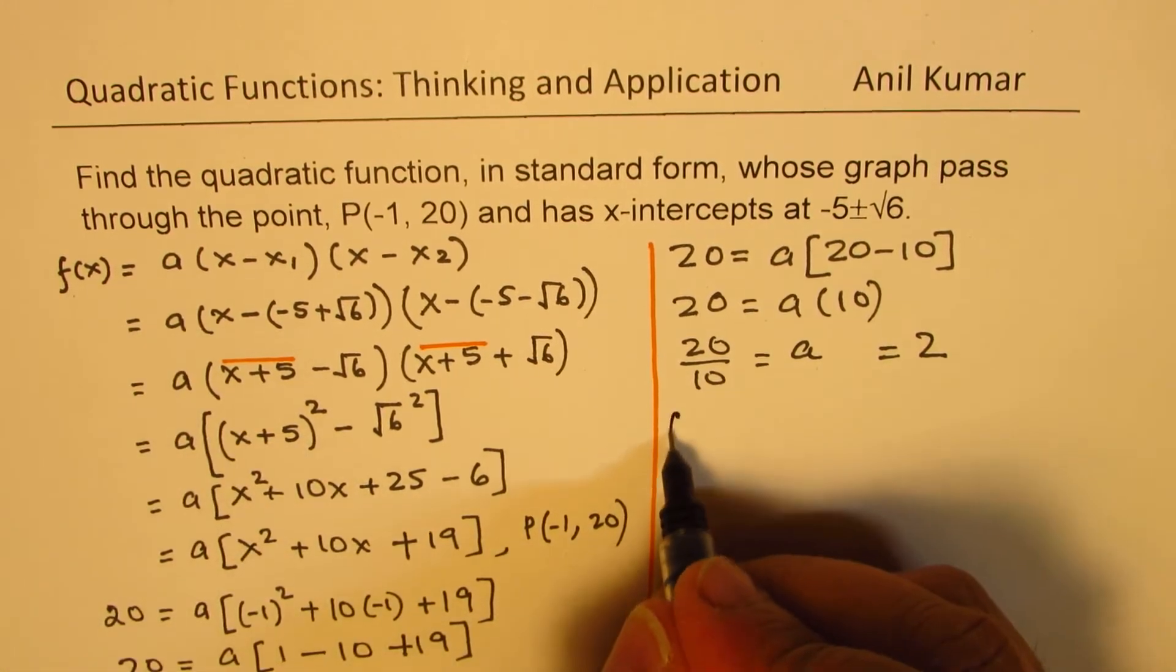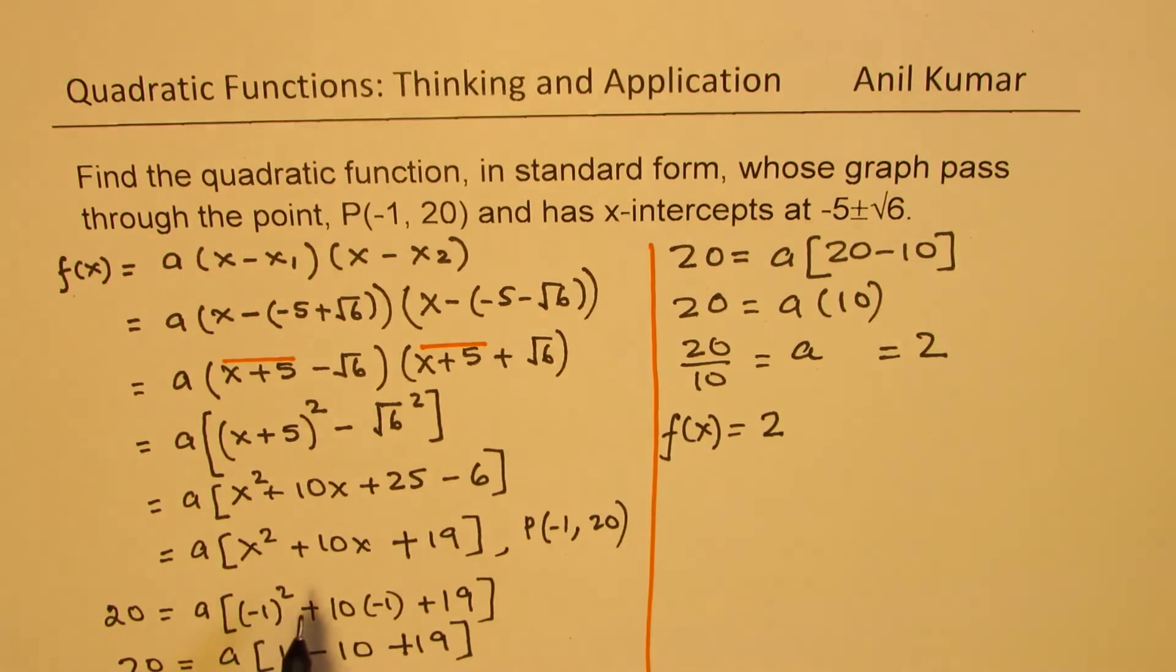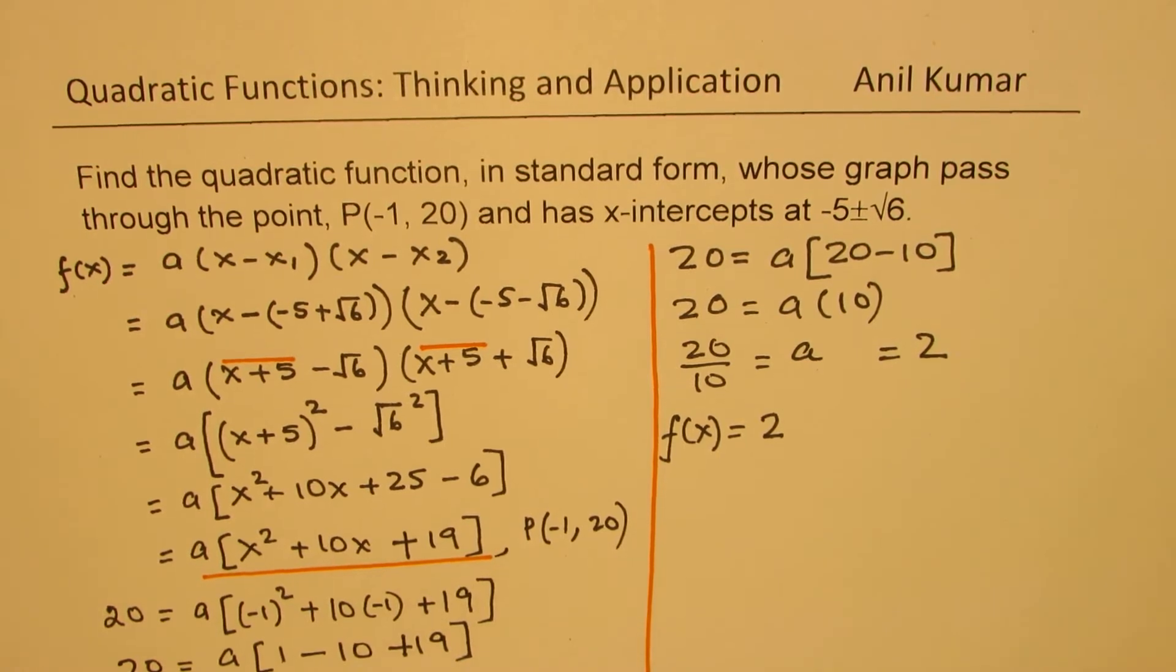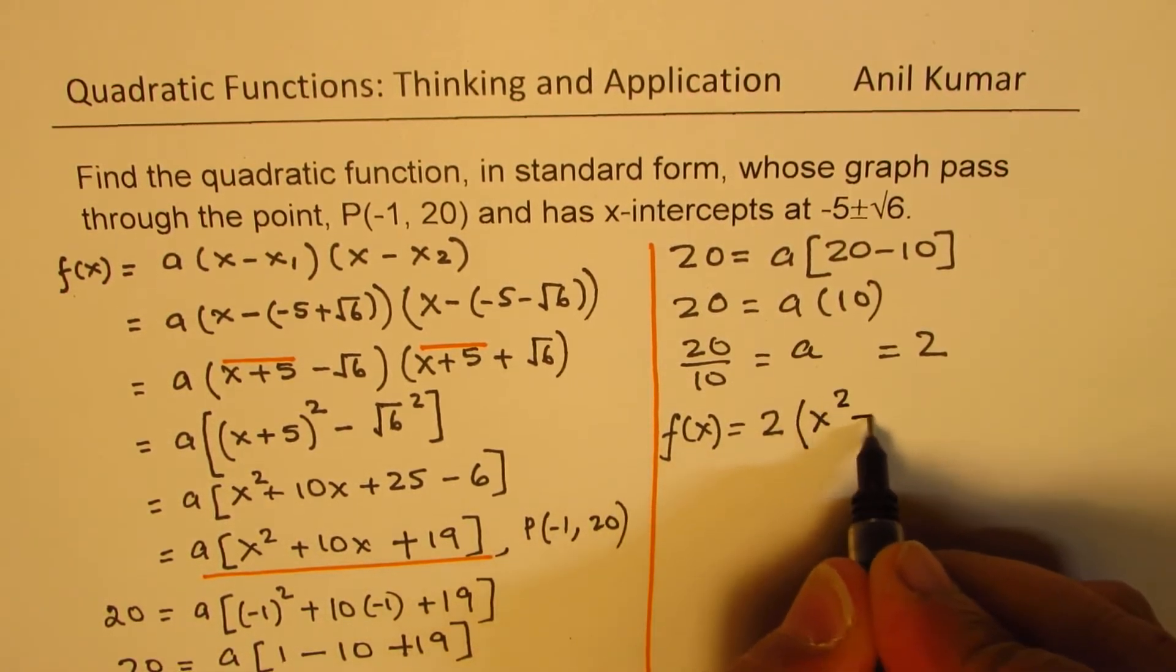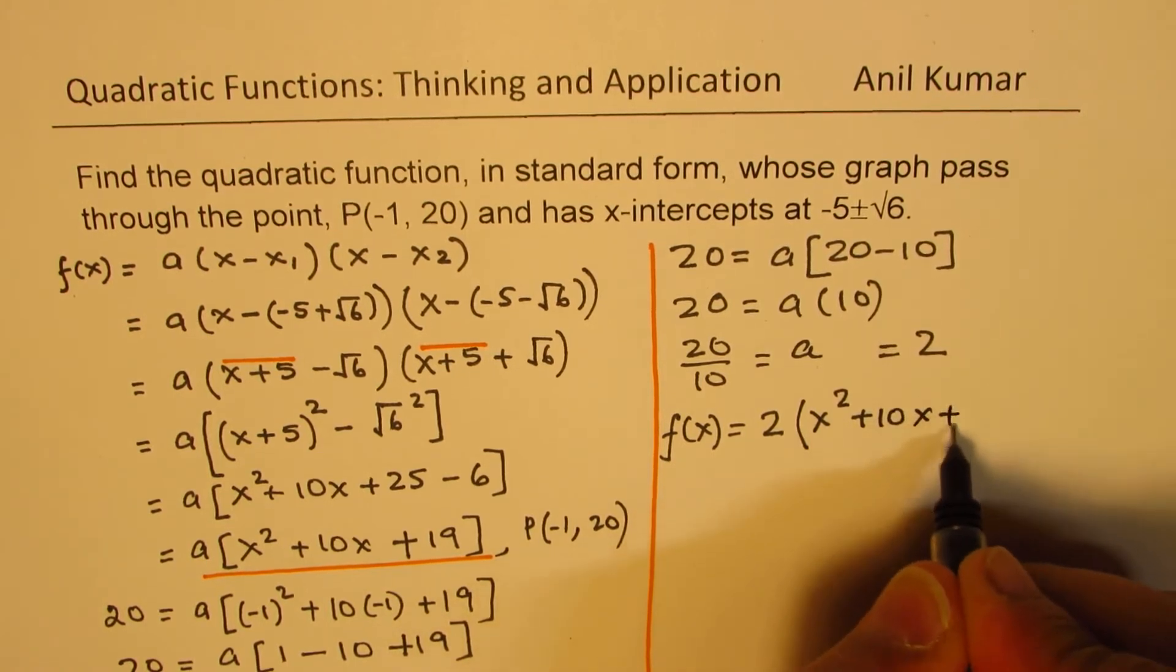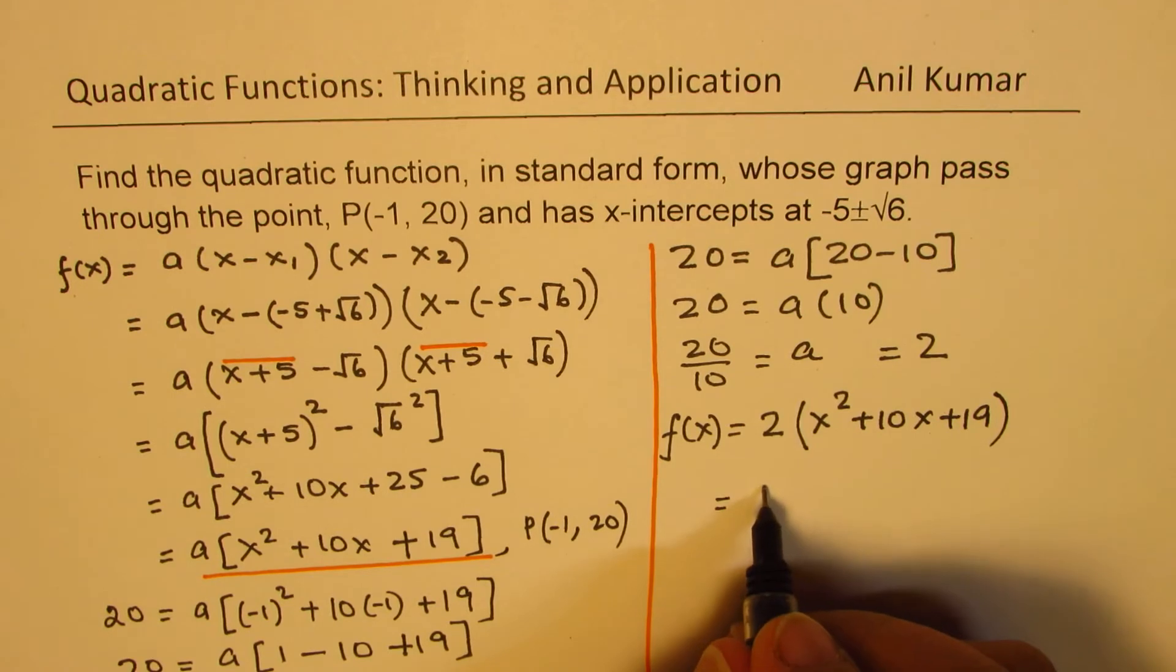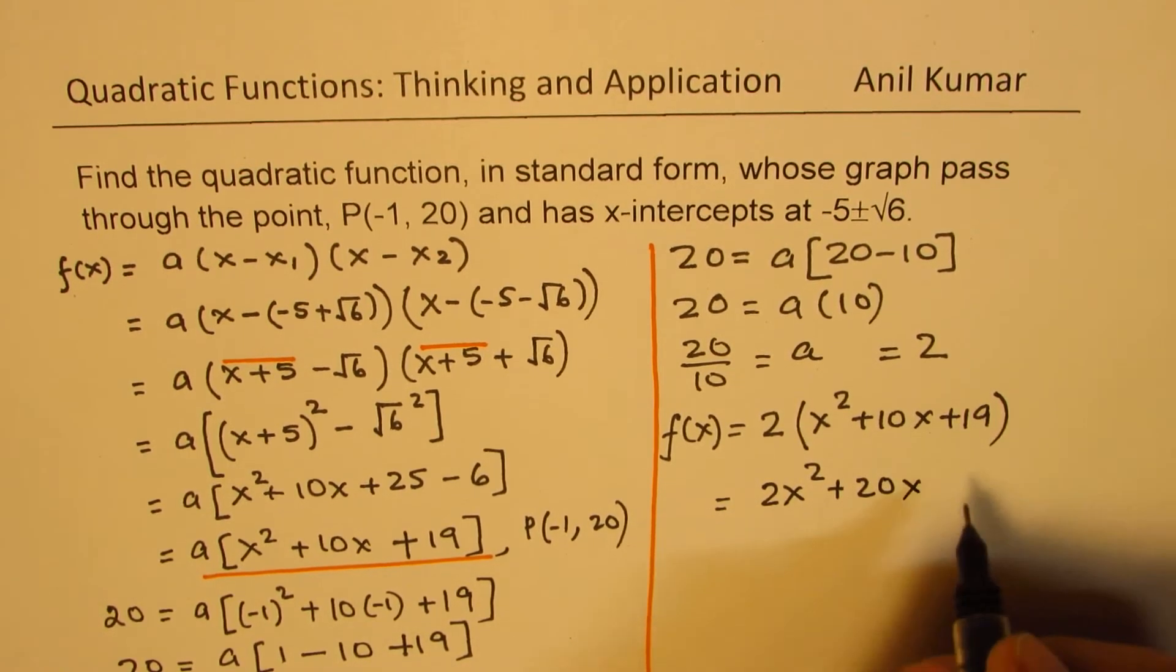So therefore, the function f(x) can now be written as 2 times all this. We know now the value of a. We'll write all this, which is (x² + 10x + 19). So when you expand this, you get 2x² + 20x + 38.